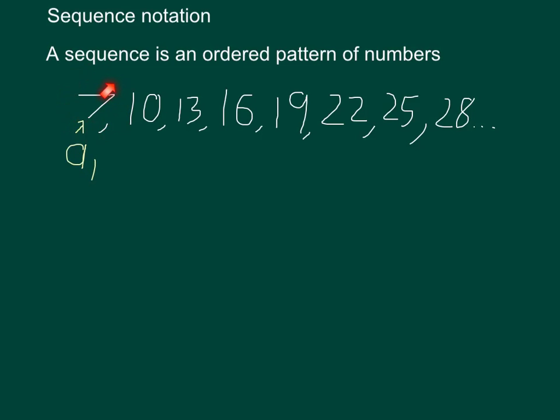Because 7 is the first thing in our sequence, we could call that A sub 1. 10, 13, and 16 are A sub 2, 3, and 4 respectively. They're the second, third, and fourth thing in the sequence.